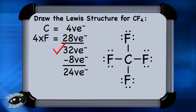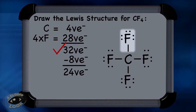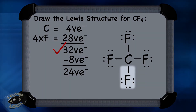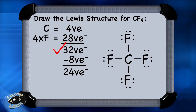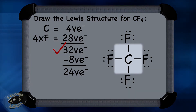To make sure your Lewis structure is correct, always check to make sure that each atom is stable. Each fluorine has 8 electrons, and even the central carbon has 8, because remember, a line indicates a shared pair of electrons, or a single bond.